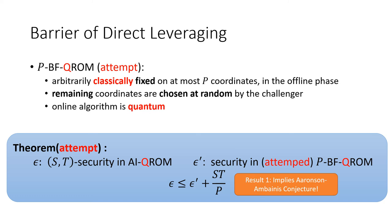However, as our first result pointed out, we showed that such a theorem would imply the famous Aaronson-Ambainis conjecture. Thus, we believe such a direct leveraging has a barrier.